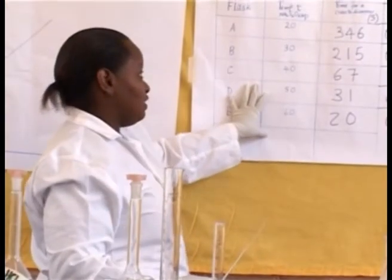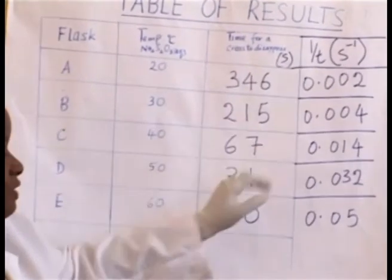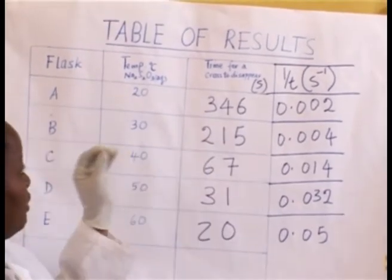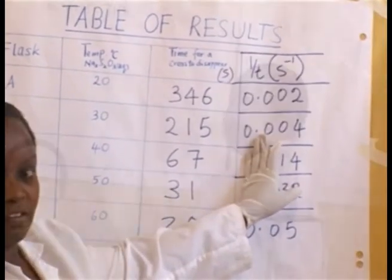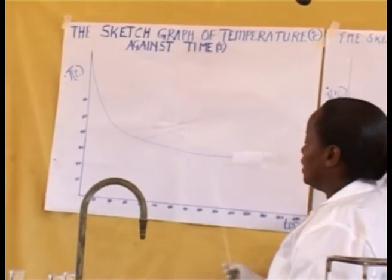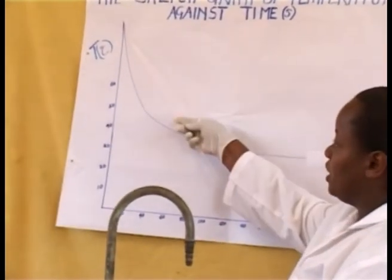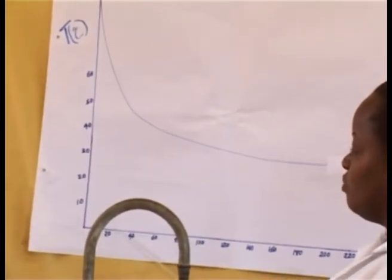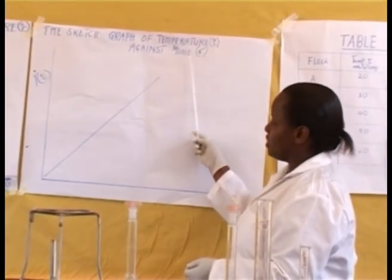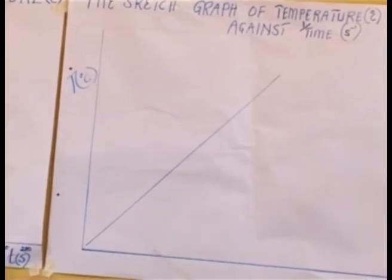From the table of results, draw the graph of temperature against time in seconds, and also draw the graph of temperature against the inverse of time. The sketch graph of temperature against time is parabolic in nature — that is, an increase in temperature decreases the time for the reaction to complete. In the graph of temperature against inverse time, as temperature increases, the rate of chemical reaction increases.